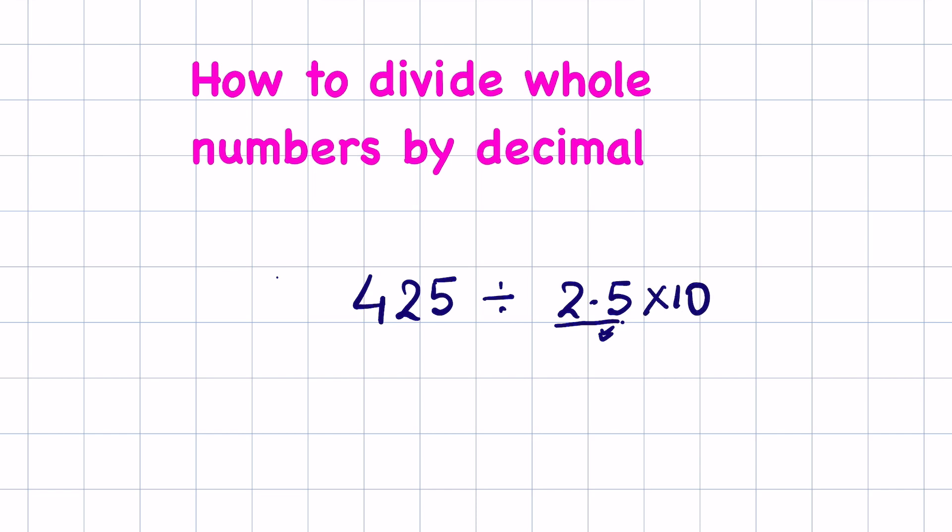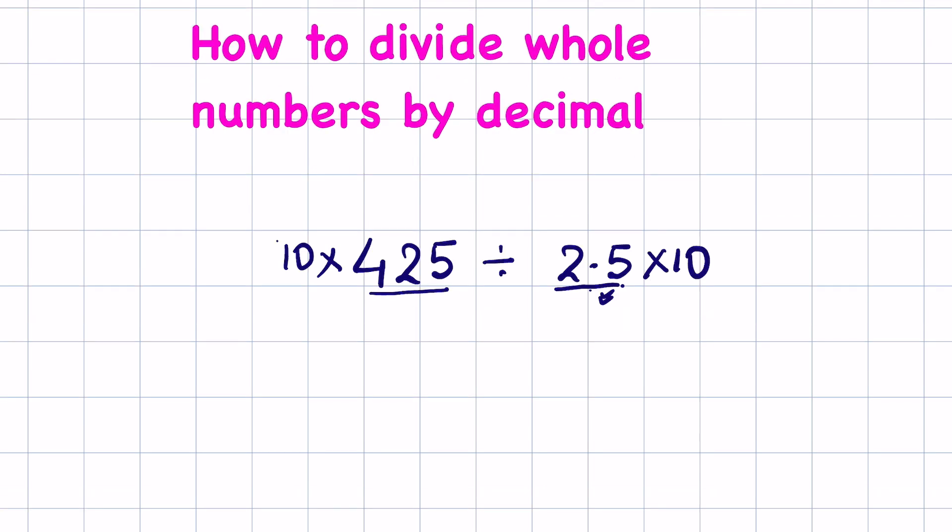So we multiply this number by 10, but then we have to multiply 425 also by 10 so that there is no difference in the actual question. When you multiply 2.5 by 10, the decimal will shift to one place right, so it will become 25 and this number will become 4250.